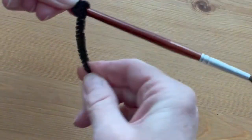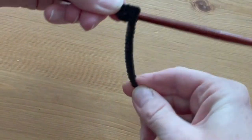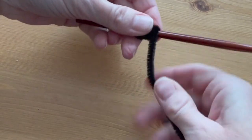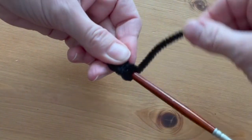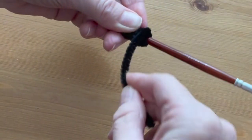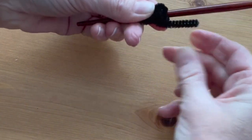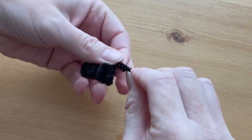Start by holding the end of one pipe cleaner against the handle of a skinny paintbrush. Wrap the pipe cleaner in a coil about five or six times, one coil right after the other. Then take the pipe cleaner and start making a head by wrapping the coils one on top of the other. Leave about an inch tail and slide it off the paintbrush.